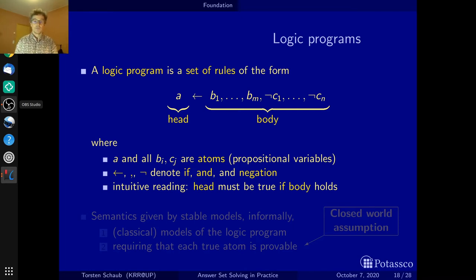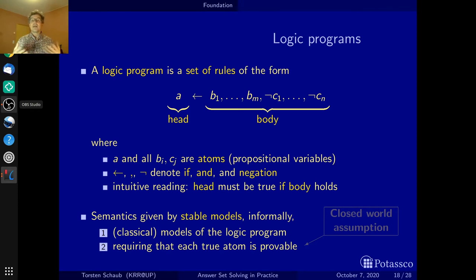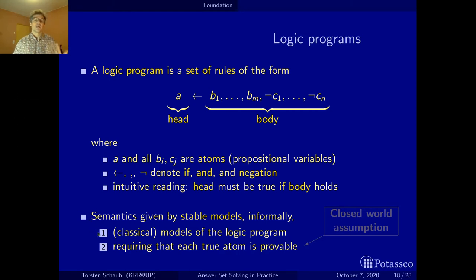A stable model is informally a particular classical model of a logic program. A classical model is an assignment of truth values to a logic program that makes it true. But in addition, there's a second condition that makes a model stable. The first condition simply says it's a model, and the second condition implements the closed world assumption. The first condition is the normal satisfaction condition for logic programs: your interpretation must satisfy the program.